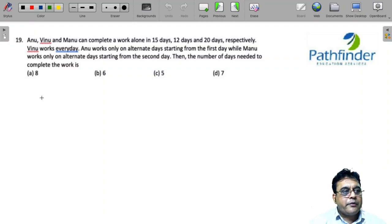CAT 2021 Slot 1 Question Number 19: Anu, Vinu and Manu can complete a work in 15, 12 and 20 days respectively. Vinu works every day. Anu works on alternate days starting from the first day while Manu works only on alternate days starting from the second day. Then, the number of days needed to complete the work is: